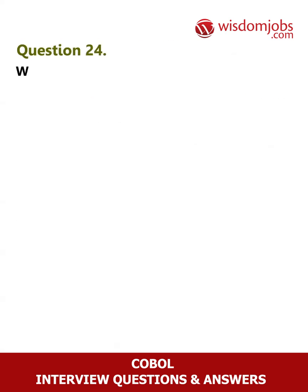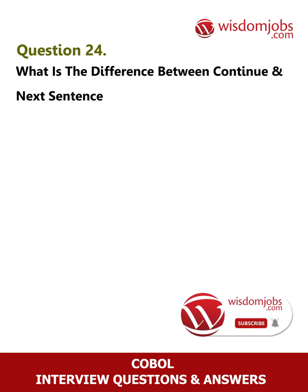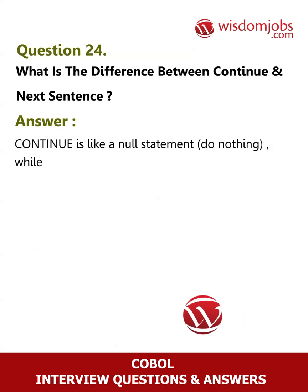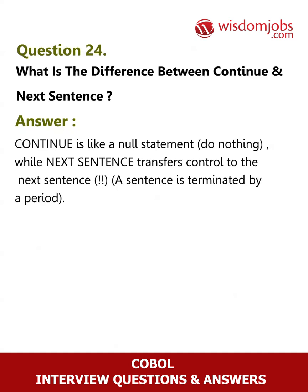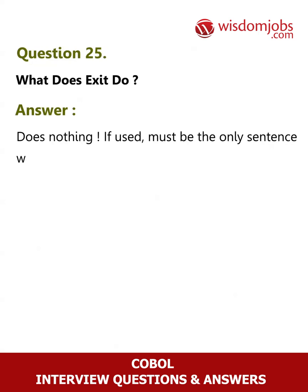Question 24: What is the difference between CONTINUE and NEXT SENTENCE? Answer: CONTINUE is like a null statement — do nothing. NEXT SENTENCE transfers control to the next sentence, where a sentence is terminated by a period. Question 25: What does EXIT do? Answer: It does nothing. If used, it must be the only sentence within a paragraph.